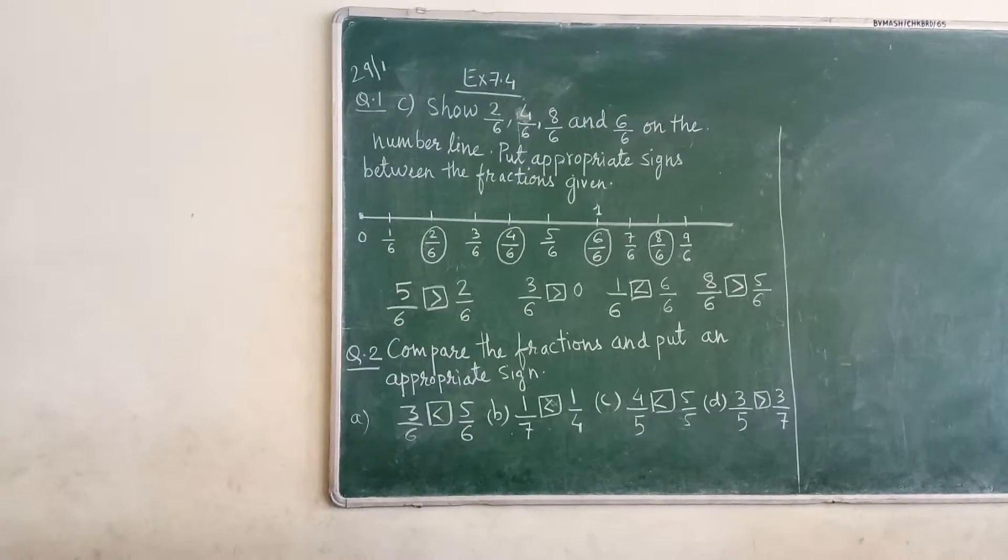Then 1 upon 6, 2 upon 6, 3 upon 6, 4 upon 6, 5 upon 6, 6 upon 6, 7 upon 6, 8 upon 6, 9 upon 6, like this. You have to draw and you have to show 2 upon 6, 2 upon 6, 4 upon 6, 6 upon 6. You can see on the board I have circled.